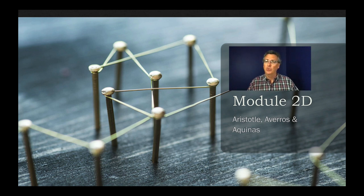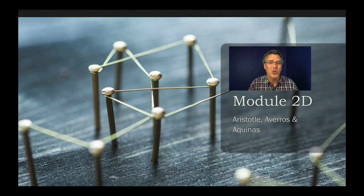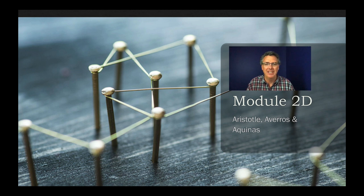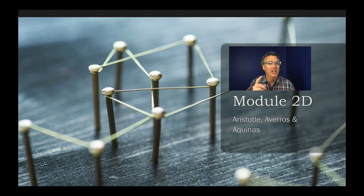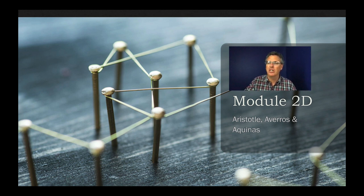Here we are, Module D. As you'll see, it's Aristotle, Averroes, and Aquinas — the A's are wild today. We're going to talk about these three figures and their influence. However, just before that, I want to make a transition from the previous lecture and talk about something that's sort of in between these two parts.